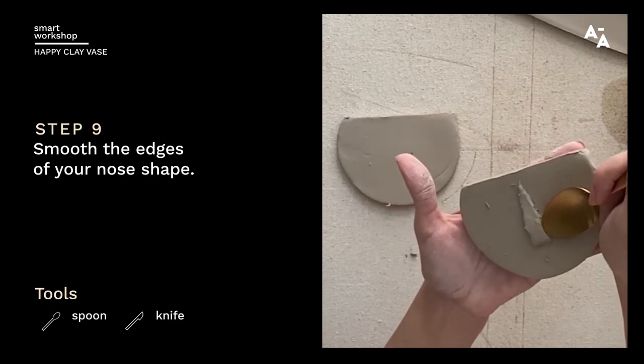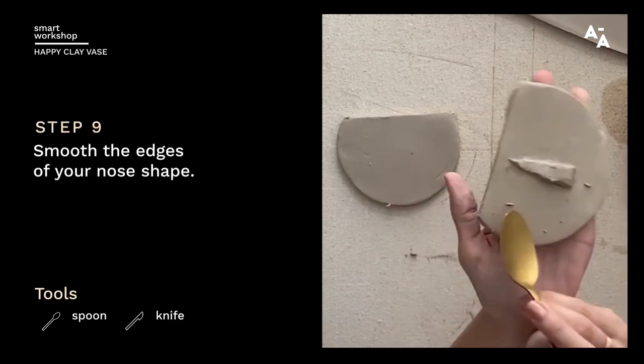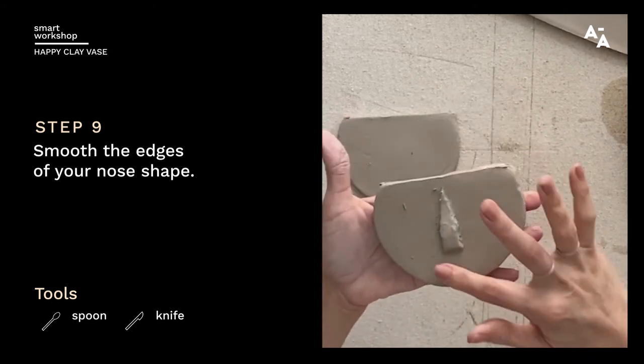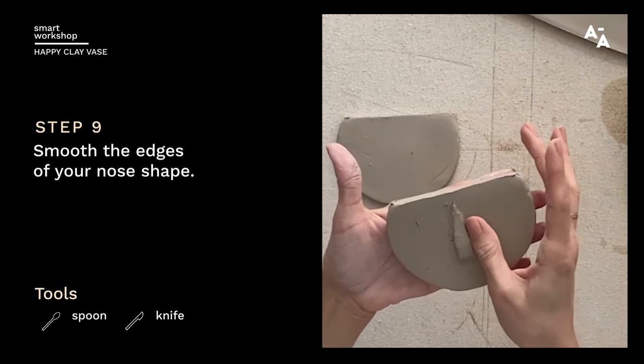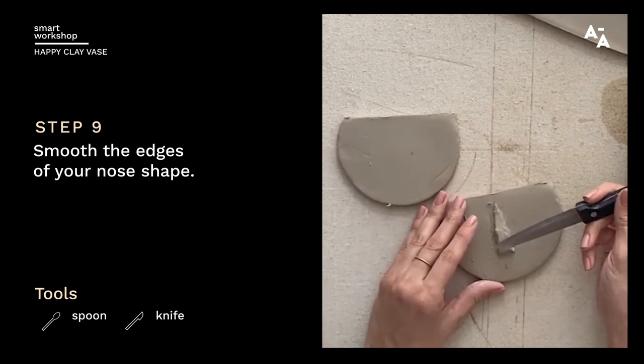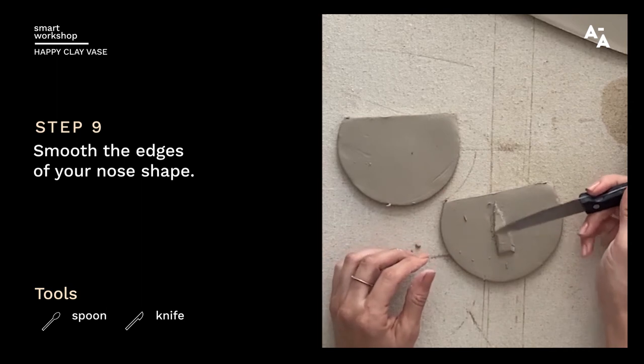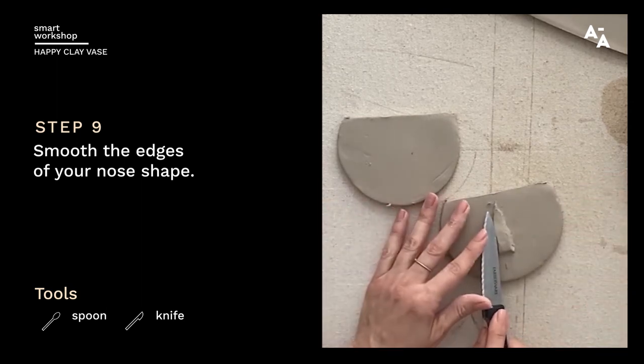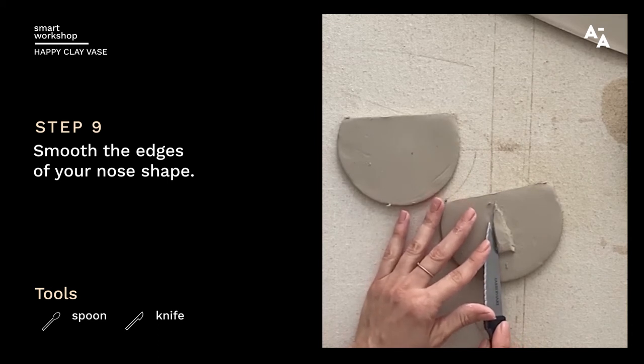I'm going to use the side of my spoon. And then you can just smooth it out quickly with the edge of your knife. Again, the back side, otherwise you'll cut things off.